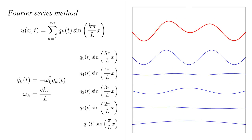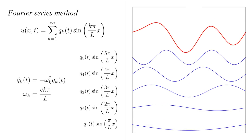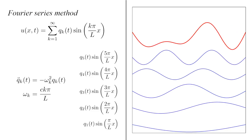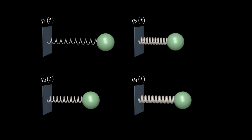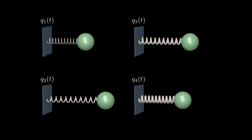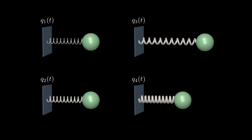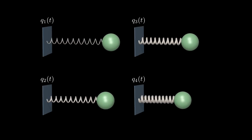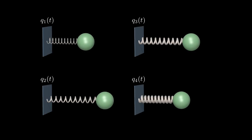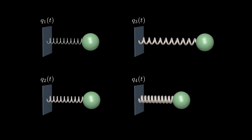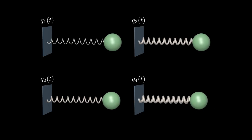Each of which satisfies the harmonic oscillator equation of motion at frequency omega k. Therefore, an arbitrary oscillation of the string is mathematically equivalent to the oscillations of an infinite number of independent harmonic oscillators, each with its own oscillation frequency.